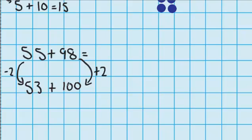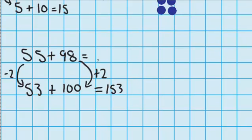So you can see this side got bigger with 2 counters, but this side got smaller by 2 counters because I was moving the counters from that pile to this one. But it means I've now got an easier question to answer. 53 plus 100 is 153. So 55 plus 98 must be 153. Let's try another one over here.